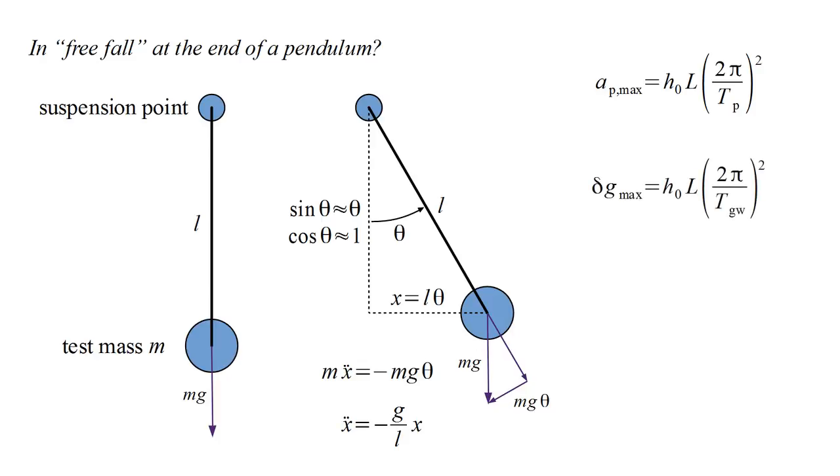Previously, we saw that the maximum acceleration due to the gravitational wave is h zero l times 2 pi over the gravitational wave period squared. The period of gravitational waves observed by LIGO is around one hundredth of a second, while the period of its suspension system is roughly one second. So the acceleration due to a gravitational wave is much larger than the acceleration due to displacement of the suspension system. Therefore, although the pendulum suspended test mass is not rigorously in free fall, it effectively is in the back and forth direction of the interferometer arm, since the acceleration due to the pendulum suspension is negligible compared to gravitational wave effects.